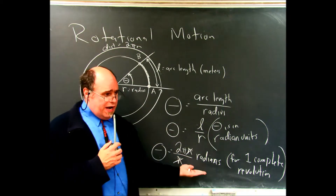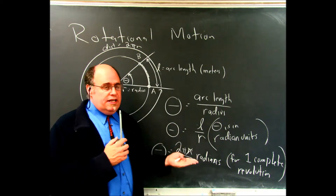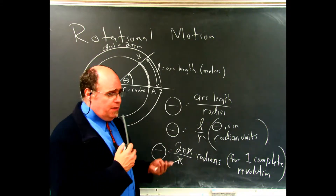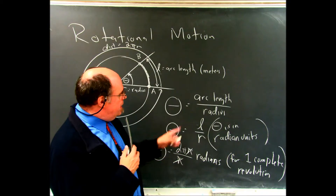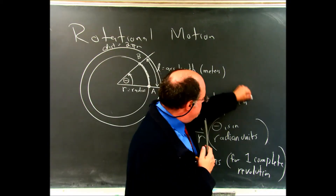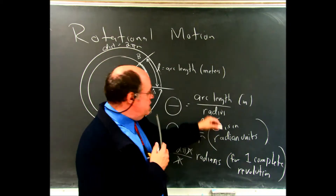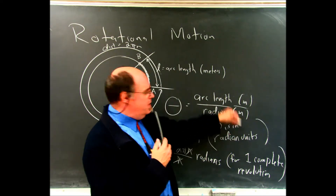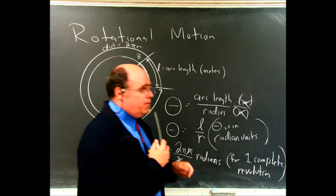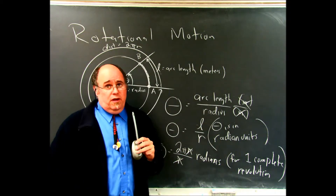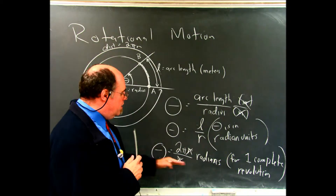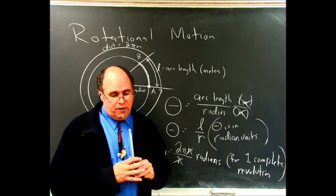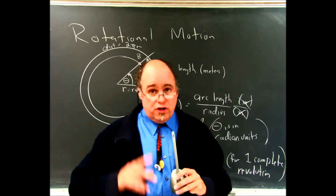The unit for radians is actually dimensionless — it doesn't carry physical meaning. It's a word just to communicate that we're talking about a specific type of angle. Arc length is in meters and the radius is in meters, so you have meters divided by meters, which cancels out, giving you nothing — basically one. So radians is a dimensionless unit, but it is a way to talk about a certain angle.